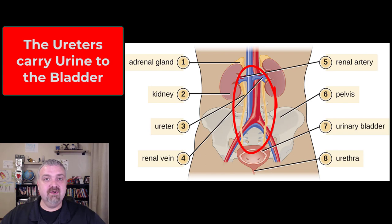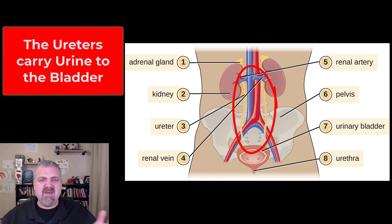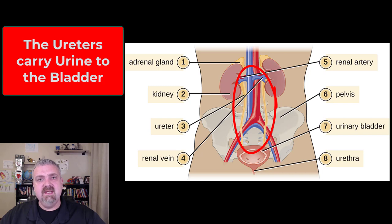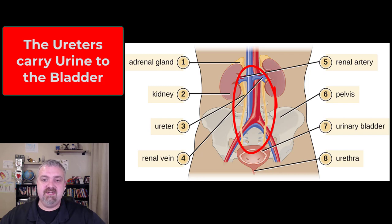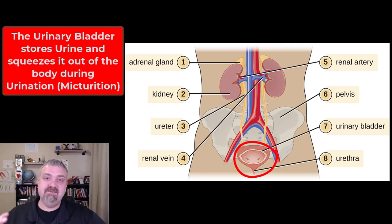Then we have the ureters. The ureters are two 12-inch hollow tubes full of smooth muscle that use peristaltic waves of contractions about every 30 seconds or so to milk urine as it's being produced — milk it from the kidney down into the bladder. That's the job of the ureters: to carry urine from the kidneys to the bladder. You usually don't even know you have ureters unless you get a stone trapped in there, and then you will definitely know they exist because of the pain.